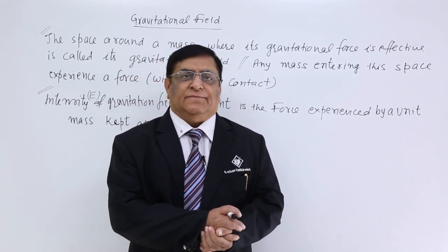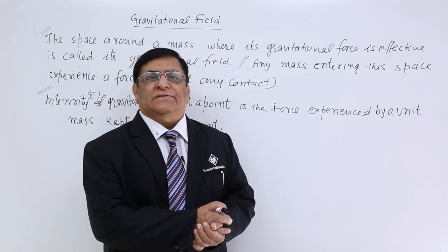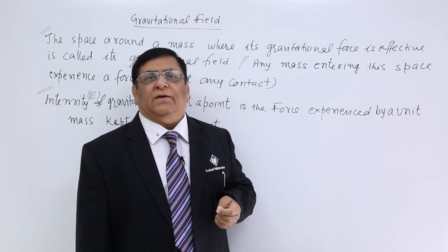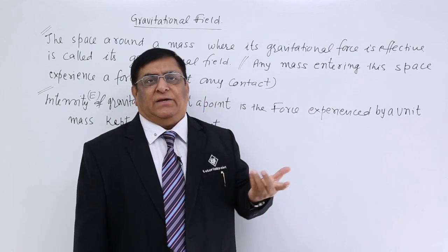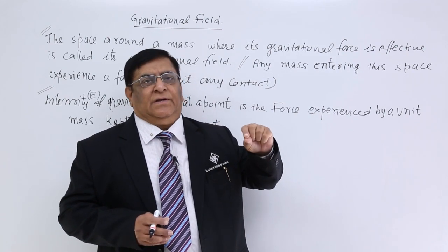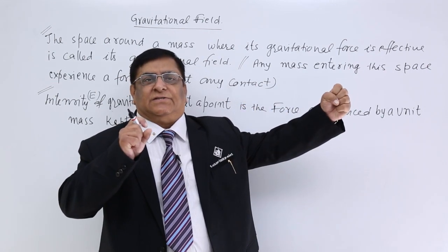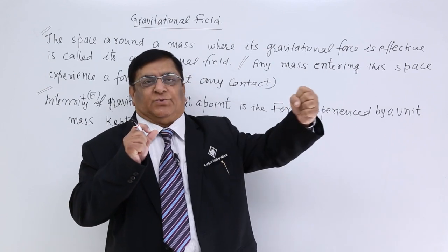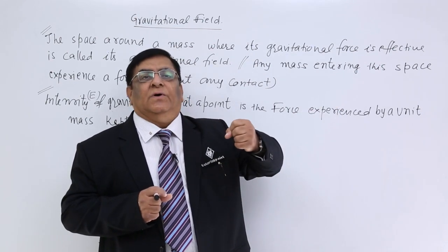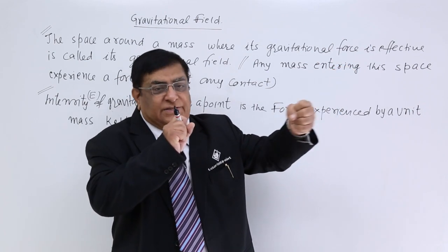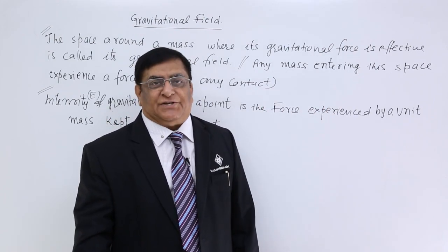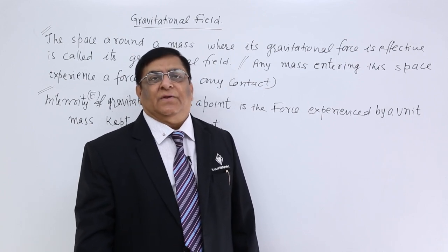We are starting today with the gravitational field. Who applies the gravitational force? Any object which has got mass. Mass is the basic reason why any object can create and apply gravitational force. Now if there is a mass, it applies force on another mass. These two masses do not come in contact — they are at a certain distance. Even then, the second mass is experiencing a force towards the first one. There is no contact, so how can it experience a force? What is that thing which is pulling it towards the first object? We don't see anything here. For that explanation, a concept of field is thought out.